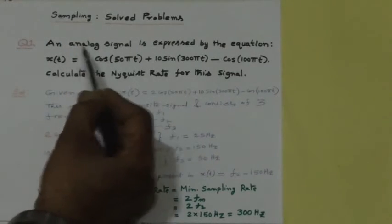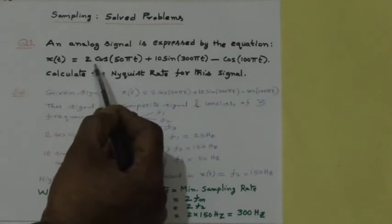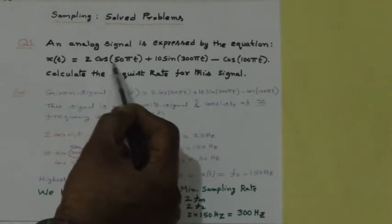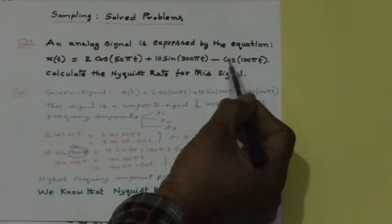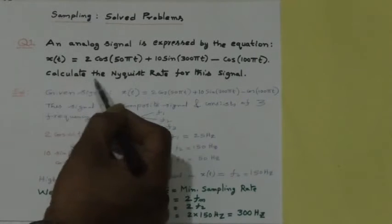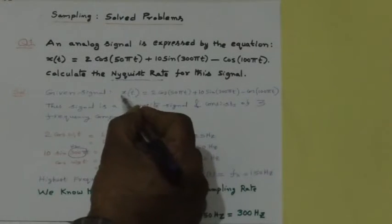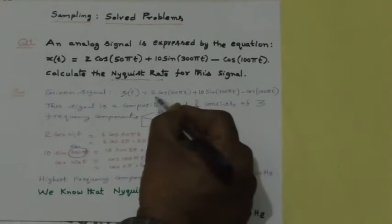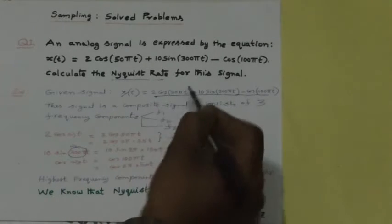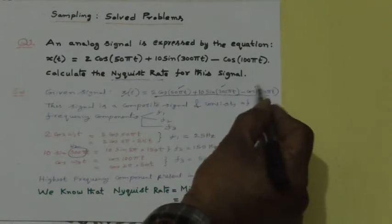Question number 1. An analog signal is expressed by the equation x(t) = 2cos(55t) + 10sin(350t) - cos(150t). Calculate the Nyquist rate for this signal. This signal is a composite signal. It consists of three frequency components: F1, F2, and F3.